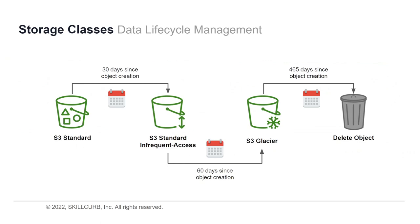Managing objects in your S3 effectively throughout their lifecycle is handled by the storage lifecycle configuration. There are two types of actions: transition actions, which define when objects move to another storage class, and expiration actions, which define when an object expires and is deleted. For example, an object could move from S3 Standard to S3 Standard Infrequent Access after 30 days, then to S3 Glacier after another 30 days, and finally be deleted at 465 days after creation.